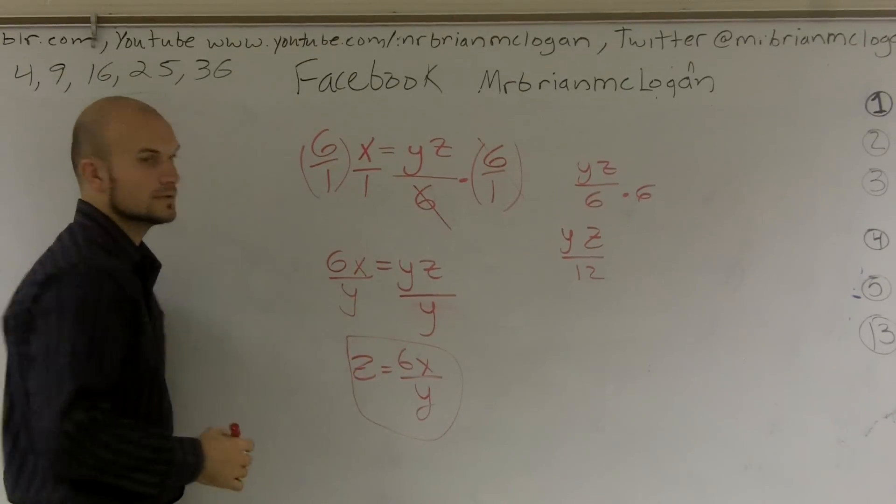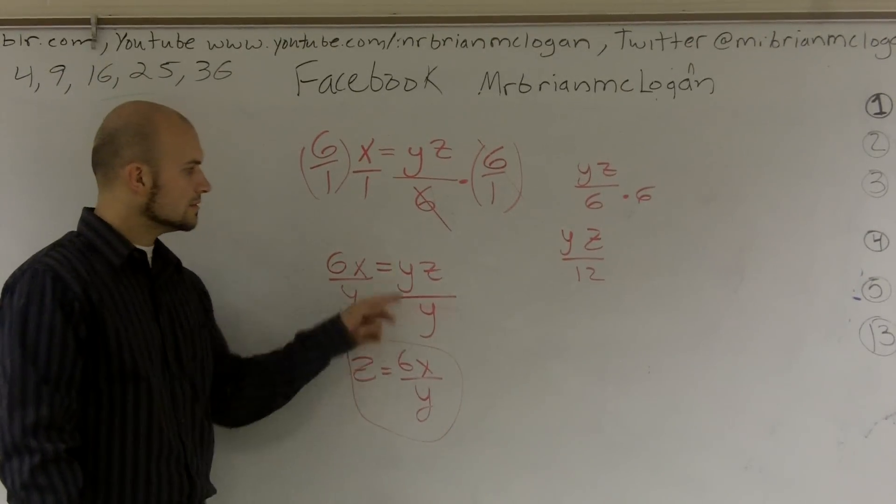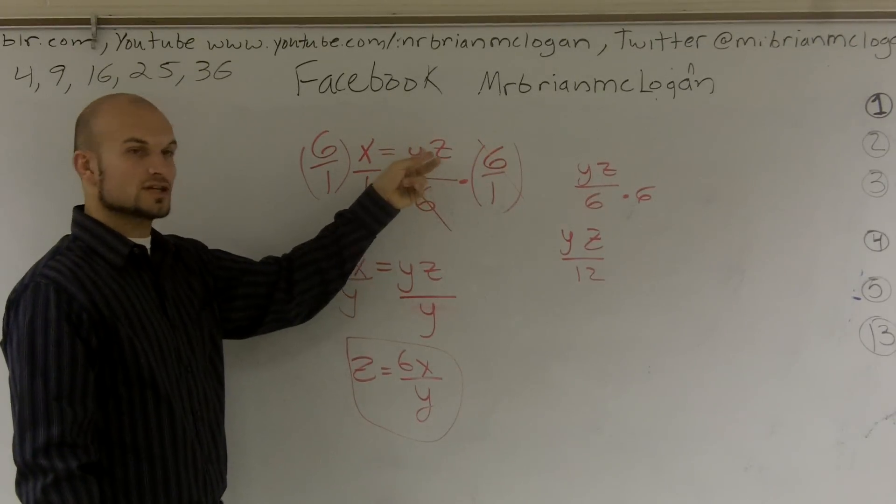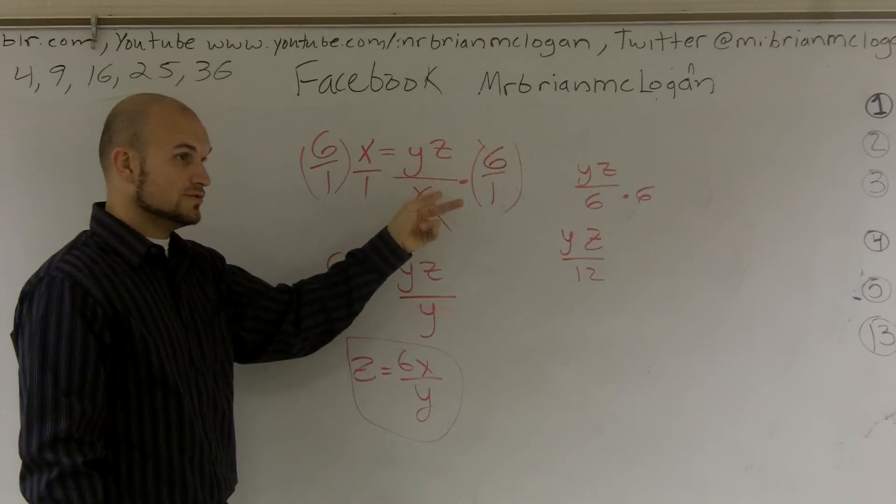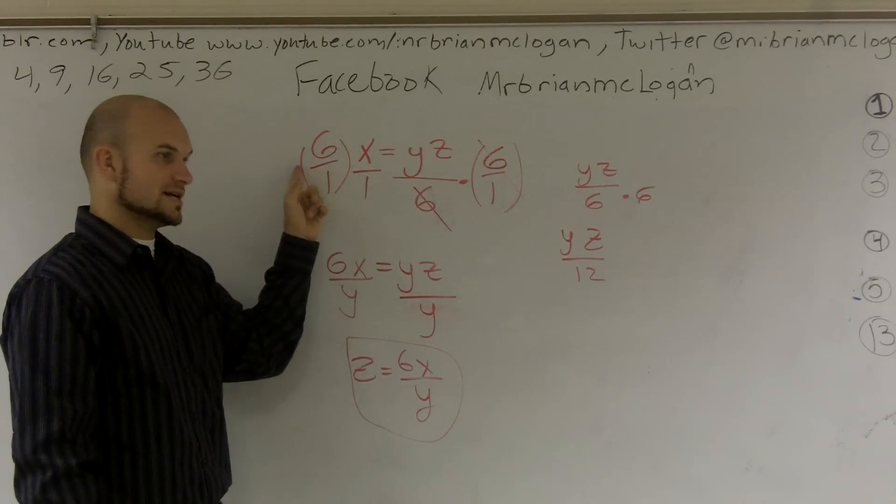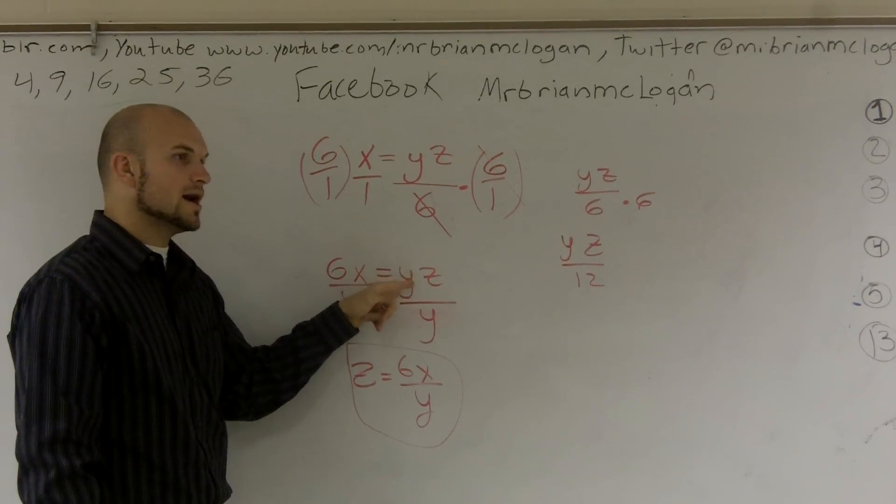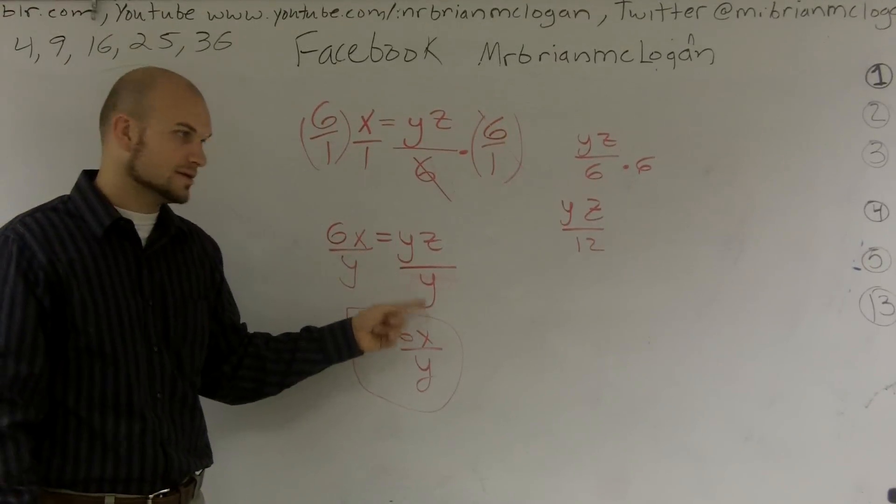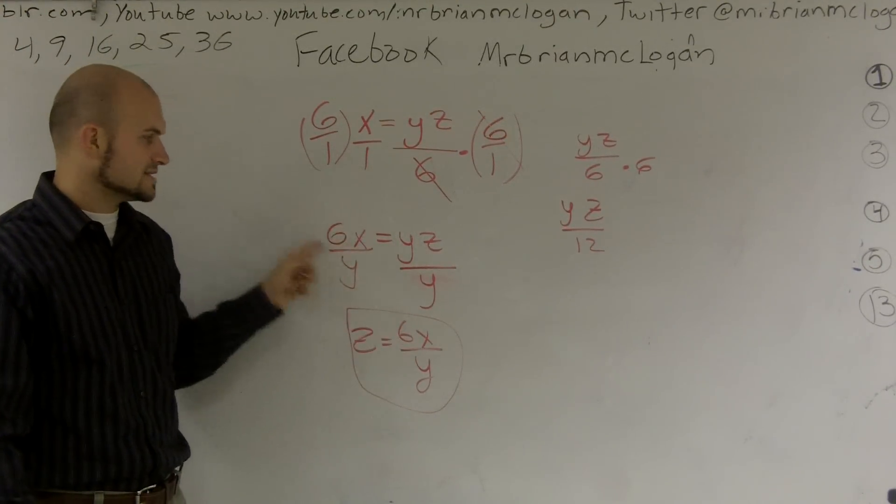See, you're getting me confused. Where are you getting all this stuff from? All I'm doing is undoing what's happening to the variable. I'm trying to solve for z. This z is being divided by 6. So to undo division, you do what? Multiply. So I multiply it on both sides of the equation. Then again, now my variable is being multiplied by y. So to undo multiplication, you have to divide. So you divide by y on both sides. And now you can't simplify this anymore. It's 6x divided by y equals z.